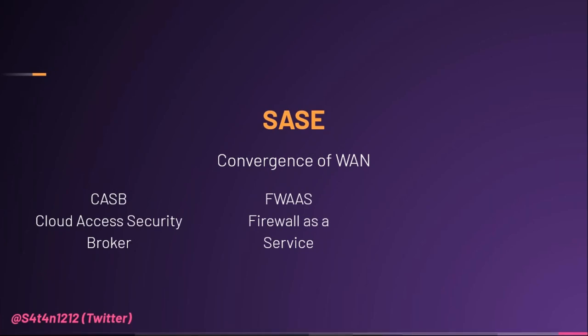Then we have Firewall as a Service, or FWaaS. FWaaS refers to a cloud firewall that delivers advanced Layer 7, or next-generation firewall capabilities, including access controls such as URL filtering, advanced threat protection, intrusion prevention, and DNS security. FWaaS is not about simply virtualizing an appliance — it enables organizations to eliminate traditional firewalls and simplify IT infrastructure. Centralized management from a single console eliminates challenges of change control, patch management, and policy management associated with next-generation firewall appliances, while delivering consistent policies across the organization.